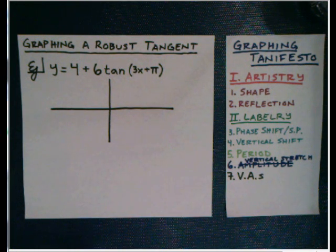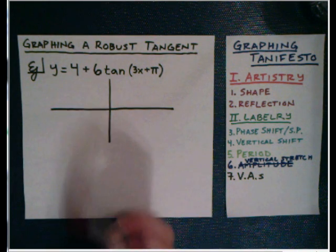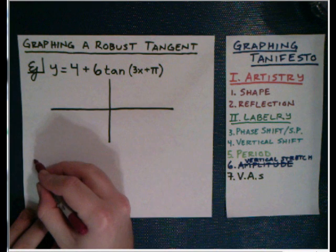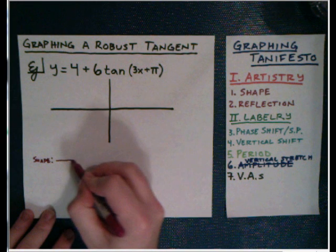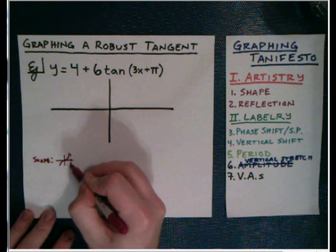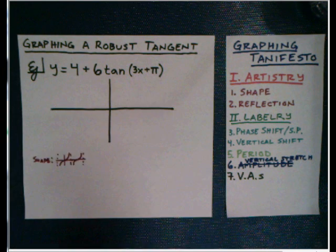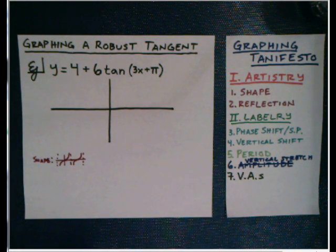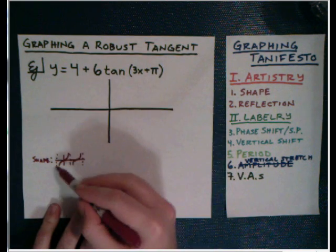First, looking at the graphing manifesto over here for reference, the first thing I want to do is the artistry, so we've got to think about the shape and whether it's reflected or not. It's plus 6 tangent, so this is a positive one, meaning we're going to have positive stink lines. The shape for tangent goes through the center and then has vertical asymptotes. In order to do this correctly and make it possible to have two periods on there, I'm going to be really careful about the way I do this.